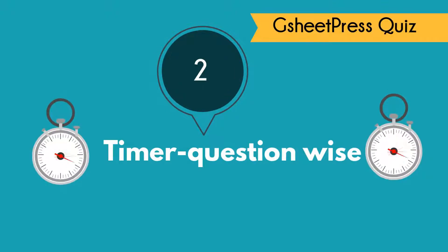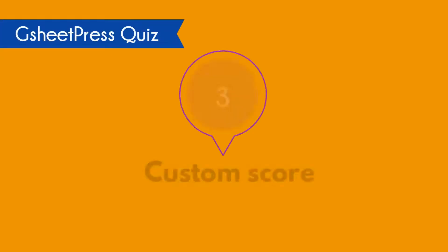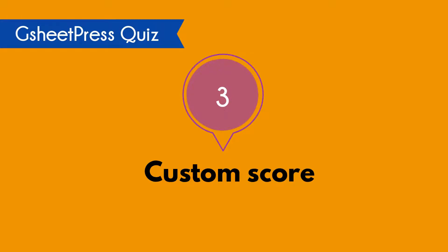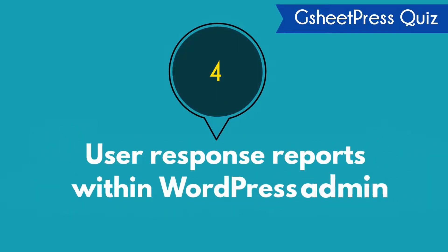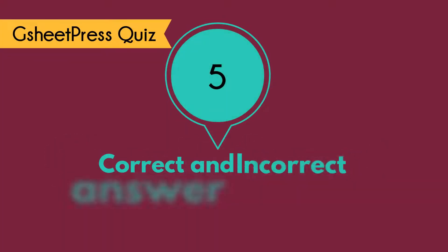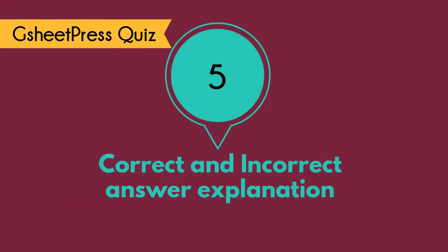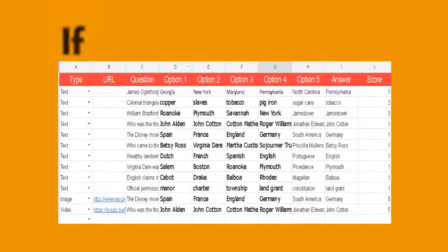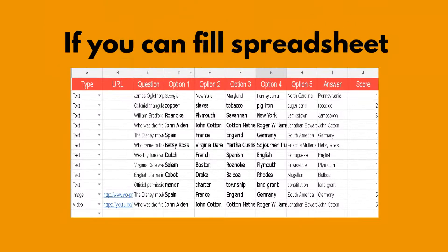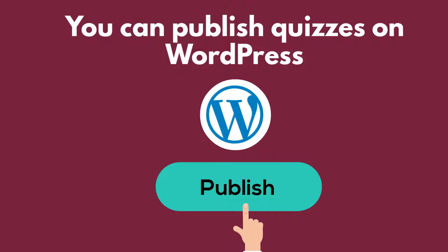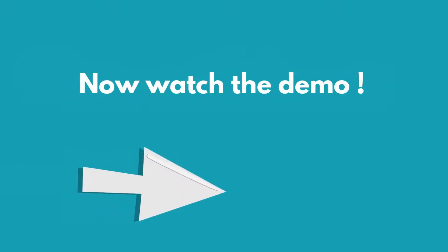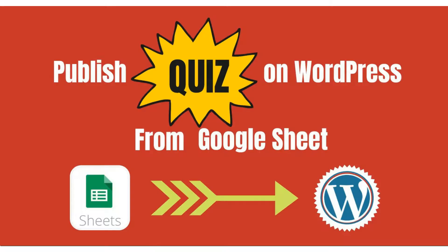Here are five great features of gsheetpress quiz: one, questions can have images or video; two, timer question-wise; three, custom score; four, user response reports within WordPress admin; five, correct and incorrect answer explanation. If you can fill a spreadsheet, you can publish quizzes on WordPress. Now watch the demo.